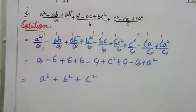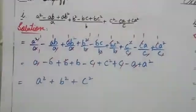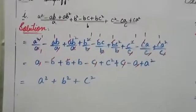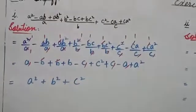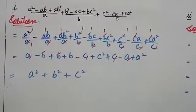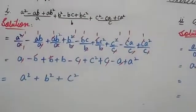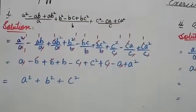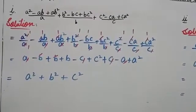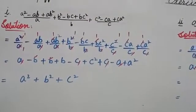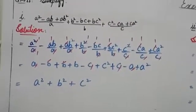Similarly, plus b² by b, minus bc by b, plus bc² by b, plus c² by c, minus ca by c, plus ca² by c. You can see that there are different factors. Now divide.